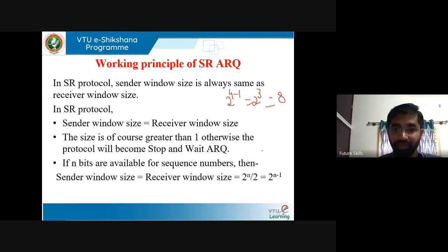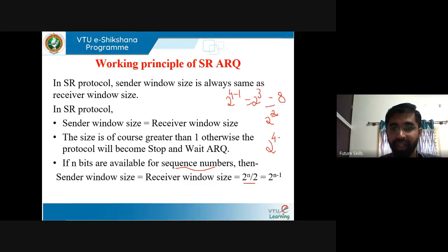If the sliding window size is 4, then representing that in powers of 2 gives 2 to the power of 2, meaning 2 bits are used in the sequence number. So if n bits are available for sequence number, the window size is 2 to the power of n minus 1. Always remember: the sending window size and receiver window size are the same in selective repeat.